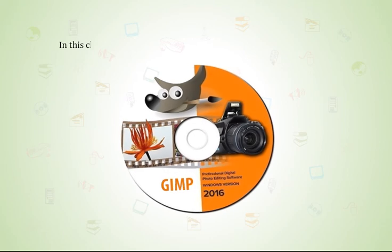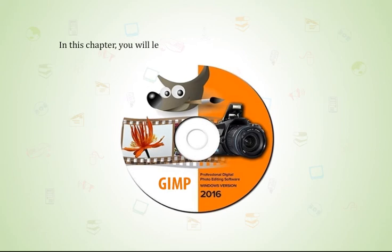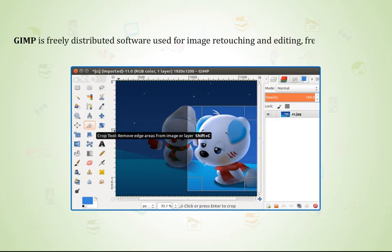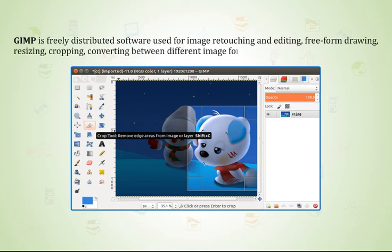In this chapter, you will learn about various features of GIMP software. GIMP is a freely distributed software used for image retouching and editing, freeform drawing, resizing, cropping, converting between different image formats and other specialized tasks.